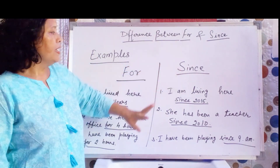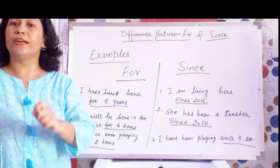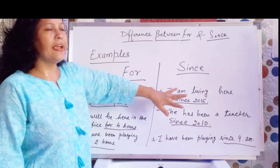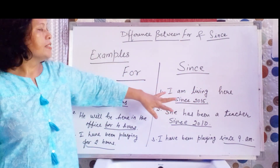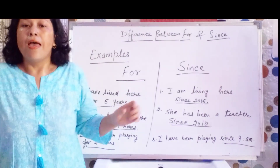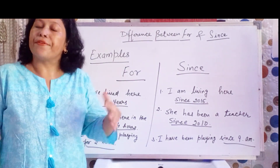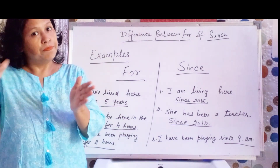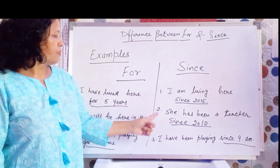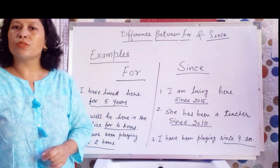Ab 'since' mein dekhenge. Koi bhi action ya event koon se point of time se shuru hota hai. 'I am living here since 2015' — main is jagah pe 2015 se raha raha hon, matlab 2015 mein aaya tha lekin main abhi bhi yahan raha raha hon. 'She has been a teacher since 2010' — 2010 mein unhone apni teaching start ki thi.